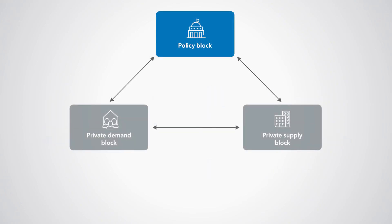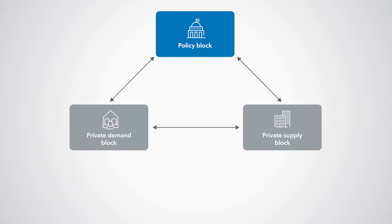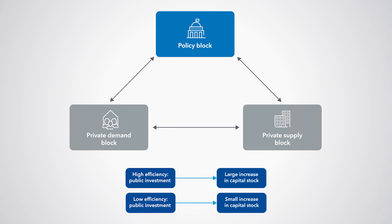The Policy Block describes the behavior of the government. It includes a budget constraint and policy reaction functions, which determine how the government sets some of its revenues and expenditures in response to debt dynamics. The path for public investment is set exogenously, and how much investment in public capital increases the stock of public capital depends on the efficiency of that investment.